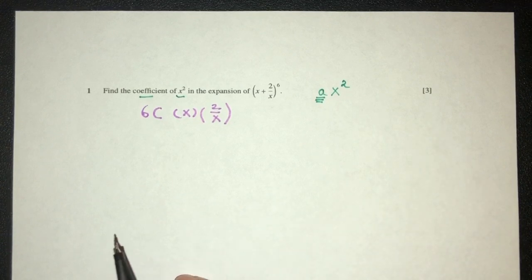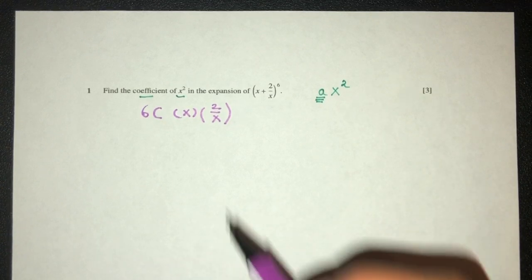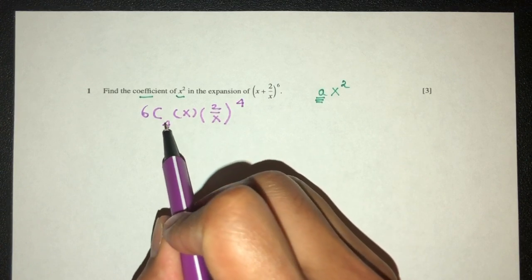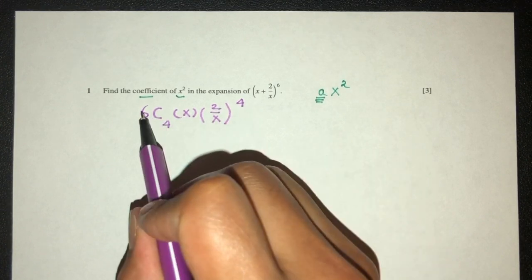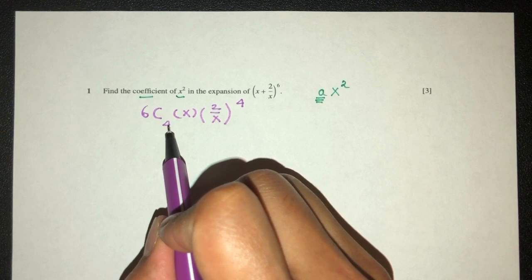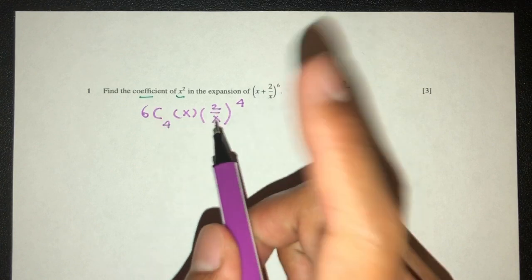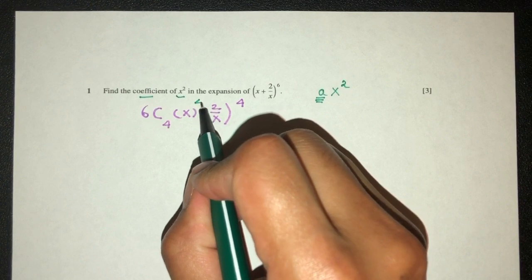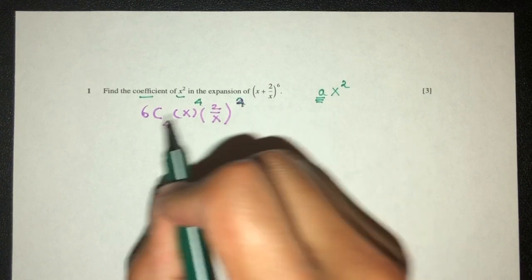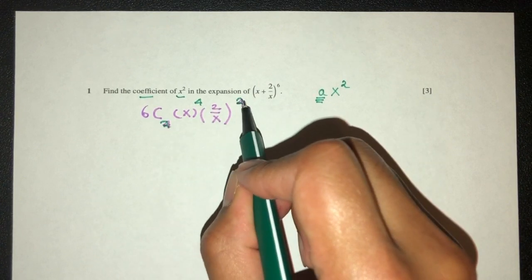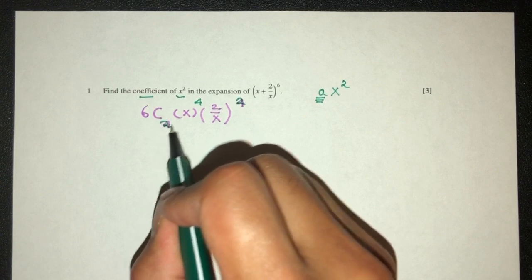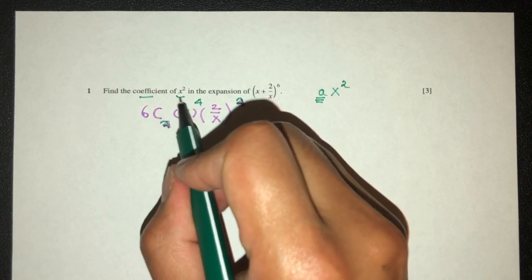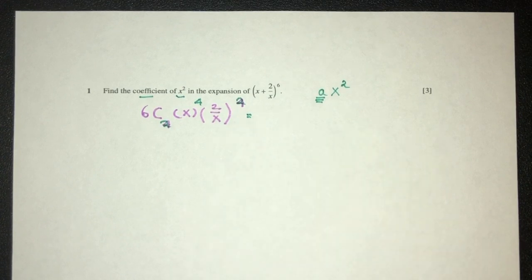By trial and error, we can observe that if you choose 4 here, this will have to be 4 — this and this will always match. Actually, I think this is wrong — my apologies. It should be 4 here and 2 here. If you choose 2 here, this will have to be 2, and 6 minus 2 will be 4, because we need to determine x squared.